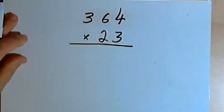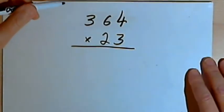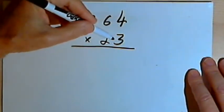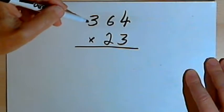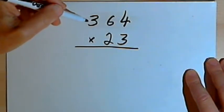So here's the first problem. I've got to multiply 364 by 23. Now this is a fairly simple process once you've mastered your basic multiplication facts. Here's how we do it.